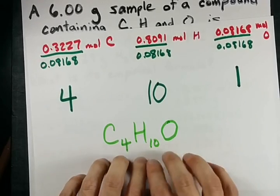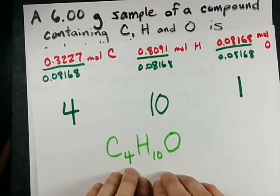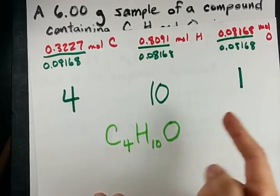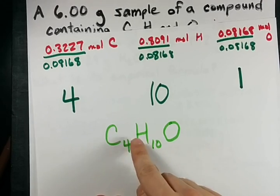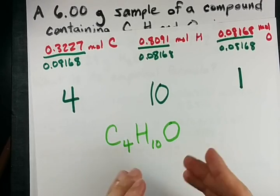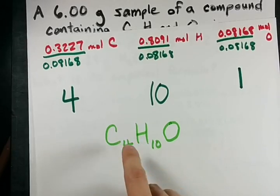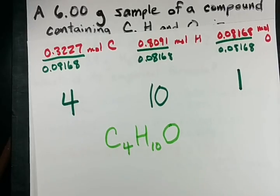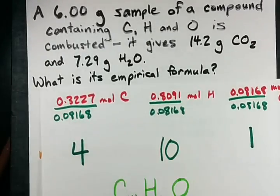Now, I don't know if this is the official formula of the molecule. This is the empirical formula, it's the lowest whole number ratio. It could be C8H20O2 for all I know, but this is the actual ratio. Maybe it's butanol or something like that. Who knows? I don't because I wasn't given enough data.